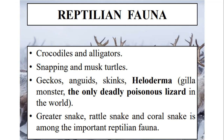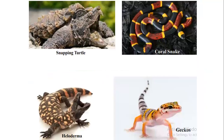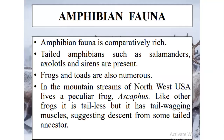Reptilian fauna includes alligators, snapping and musk turtles, geckos, and several species of snakes. Heloderma, which was also present in the Neotropical region, is found here as well. We have already discussed that heloderma is a poisonous lizard and is the world's largest poisonous lizard, present in both the Neotropical and Nearctic regions. Here you can see the heloderma — it looks like a crocodile but it is in fact a poisonous lizard.